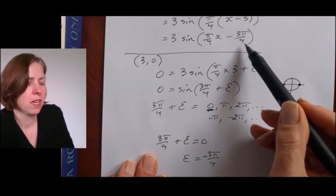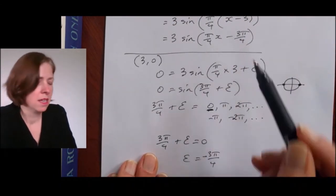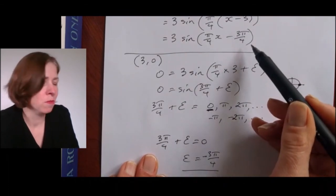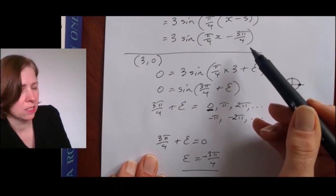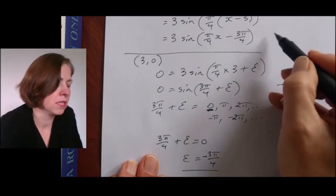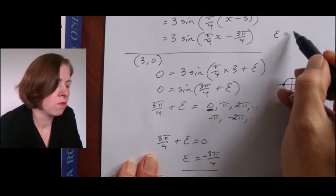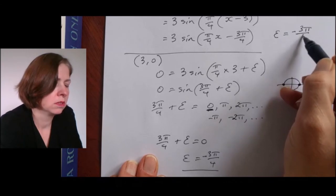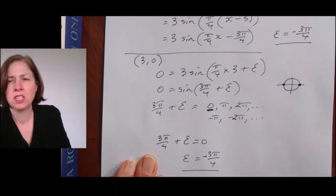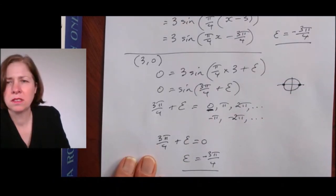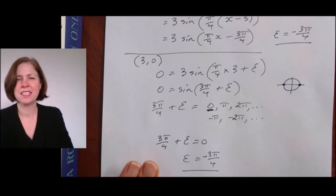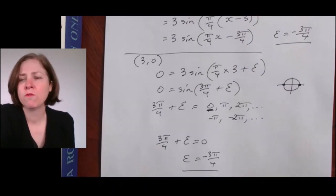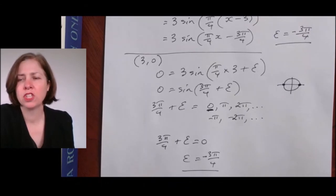That's the same answer as what I found using the other method. Since the question says find the values of a, n, and epsilon, I make sure to write epsilon equals negative three pi on four and underline it to help my examiner find it. That's the end of our video on finding the rules for graphs of circular functions.